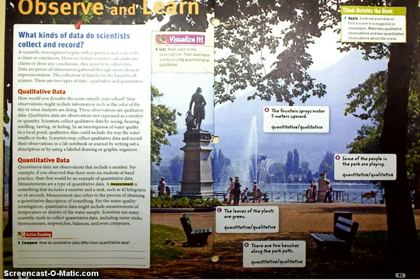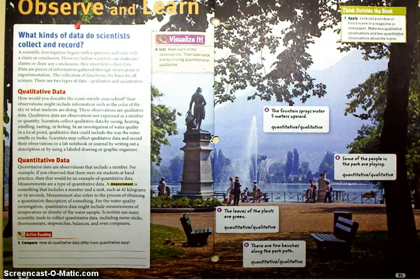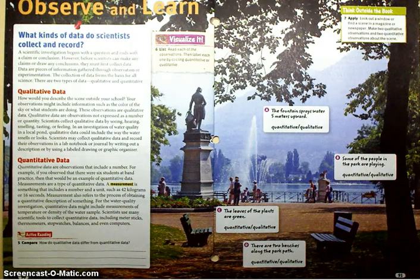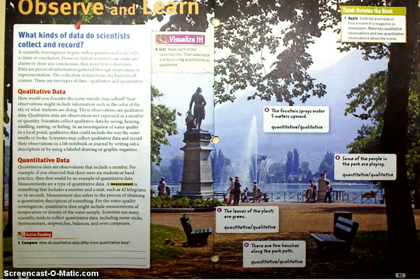On number five: how do qualitative data differ from quantitative data? Qualitative data is not expressed by numbers — qualitative describes qualities; it's a description. Whereas quantitative — think of the word quantity, which refers to how many, a number. So qualitative data is talking about something's qualities, you're describing it. Quantitative data means you are counting or measuring something.